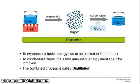Now, consider liquid. You are heating it — evaporation occurs, producing vapor. Vapor then undergoes condensation by cooling, and it becomes liquid again. This process is known as distillation.